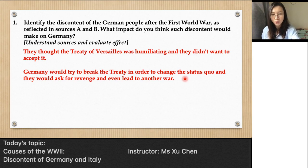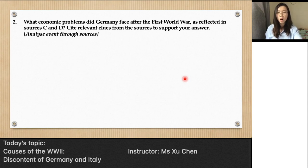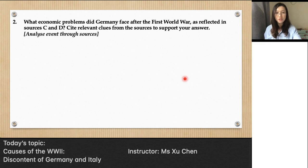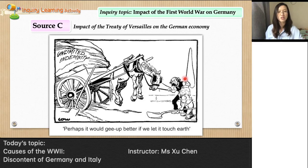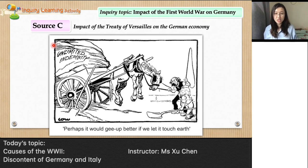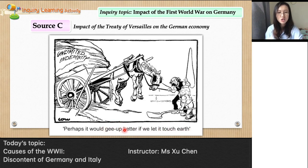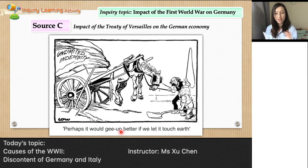The second question asks about the economic problems Germany faced after the First World War. According to the Treaty of Versailles, they had to pay huge reparations — around 6.6 billion pounds. Source C is a cartoon. Always read the title first: 'Perhaps it would gee up better if we let it touch earth.' This means letting the carriage move, as a carriage's function is to transport things. From the cartoon, the load is too heavy for the horse to even touch the ground.